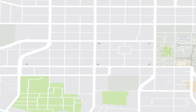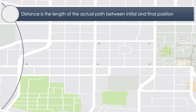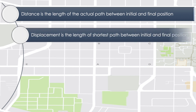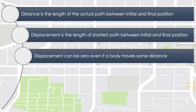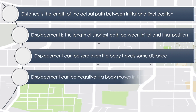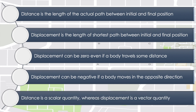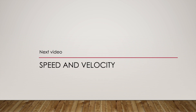And now, the summary of this video. Distance is the length of the actual path between the initial and final position. Displacement is the length of the shortest path between the initial and final position. Displacement can be 0 even if a body travels some distance. Displacement can also be negative if a body travels in the opposite direction. And that is why, while distance is a scalar quantity, displacement is a vector quantity. In the next video, we will understand two other terms used to describe motion, and they are speed and velocity.